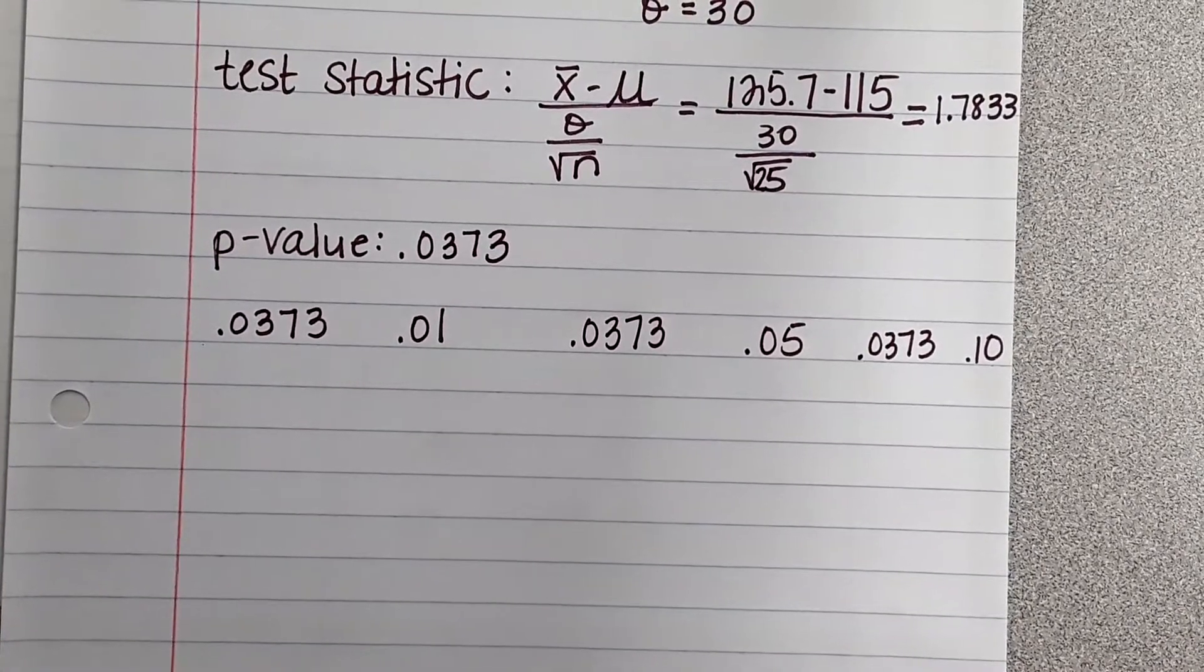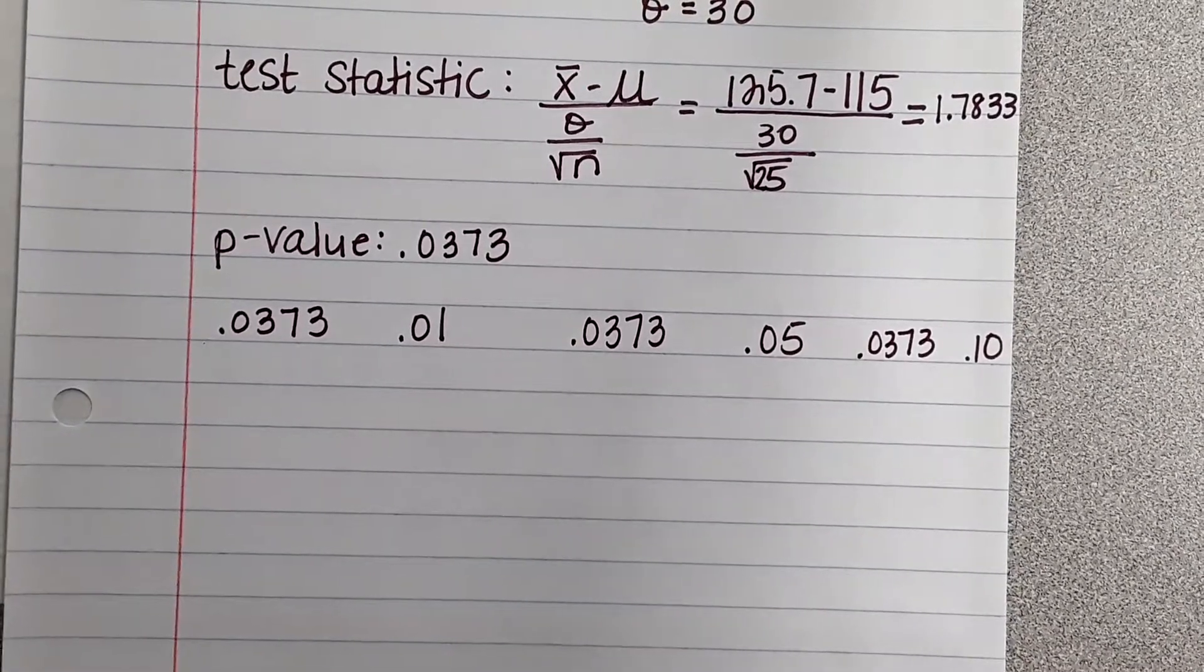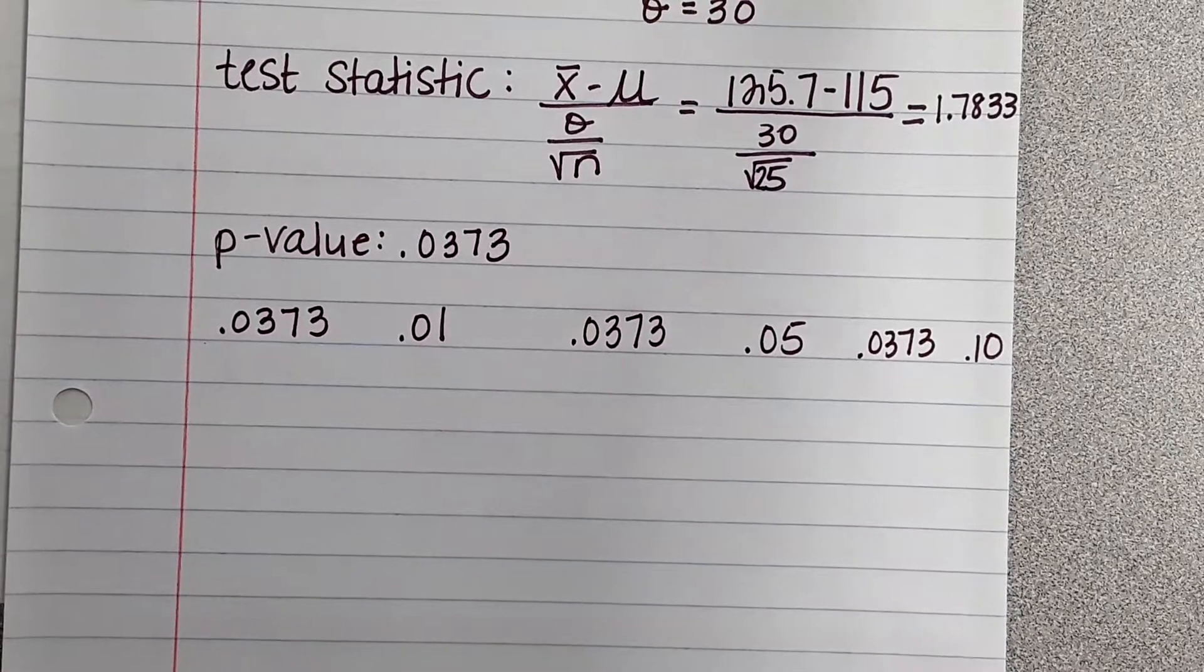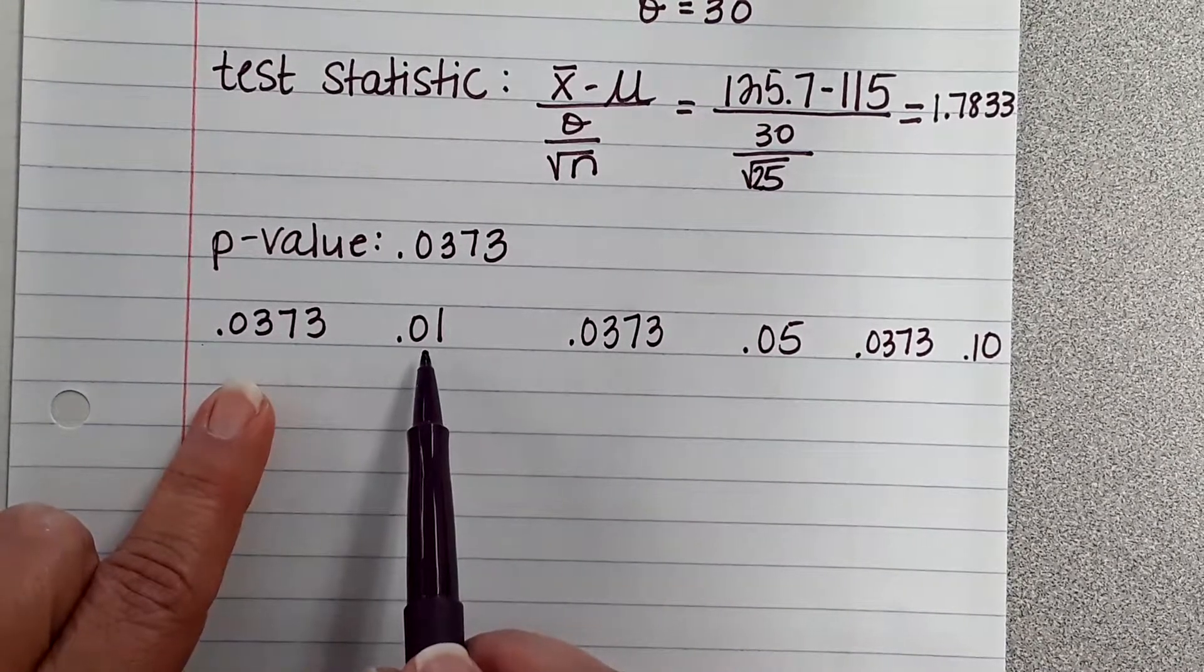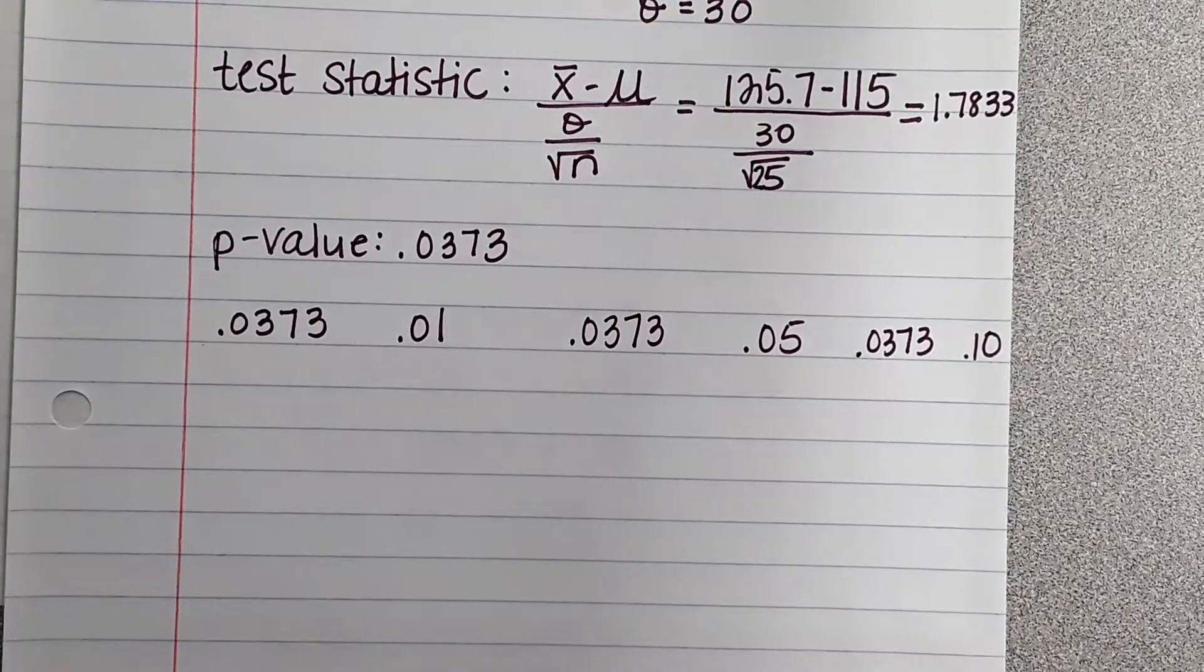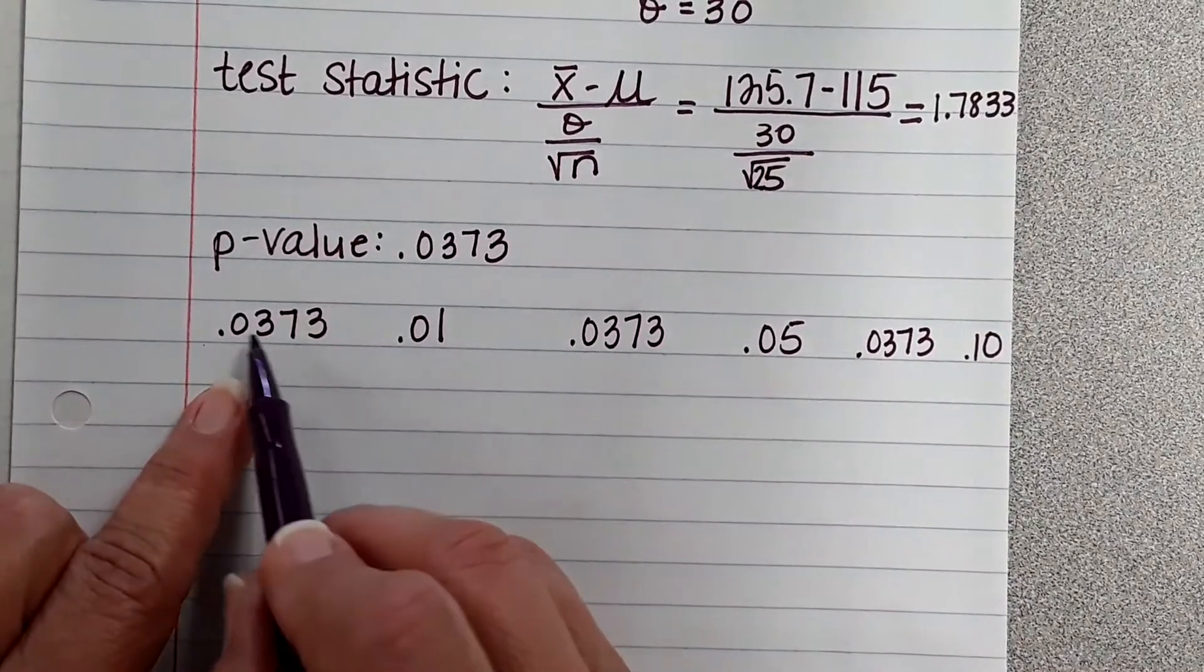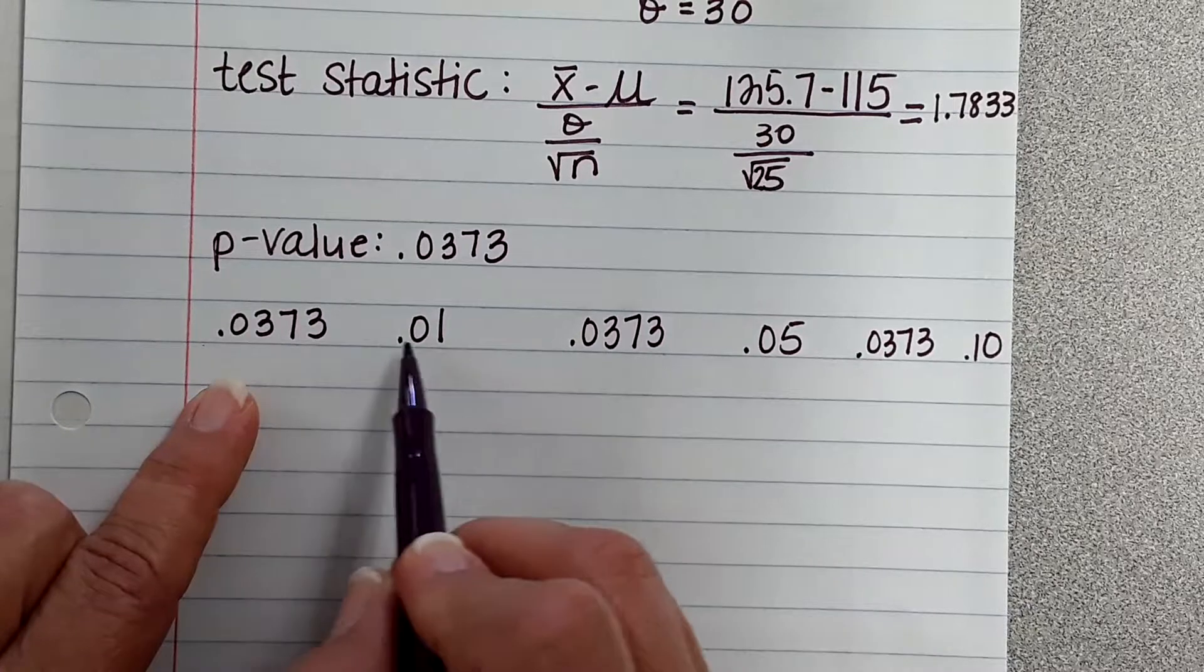Okay, so just for this problem, you're not going to do this for every problem, but for right now I want to show you how you determine. So you're going to compare your p-value to a significance level. And I've picked three significance levels. So 0.0373, at 0.01, if that's our significant level, is our p-value greater than or less than this?